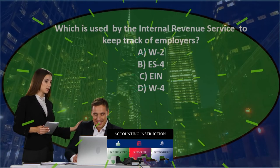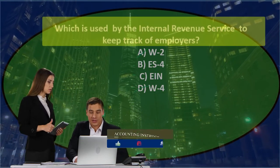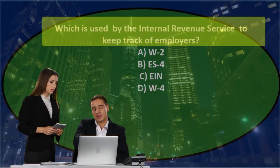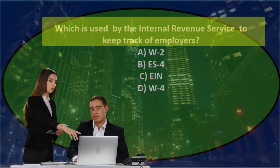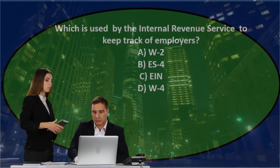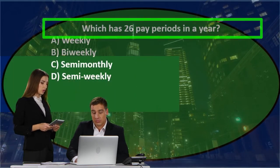So the correct answer is C — which is used by the Internal Revenue Service to keep track of employers? C: EIN number. Next question.